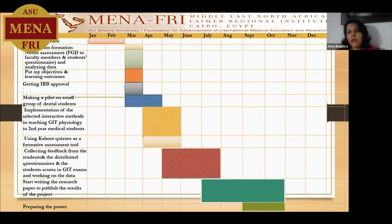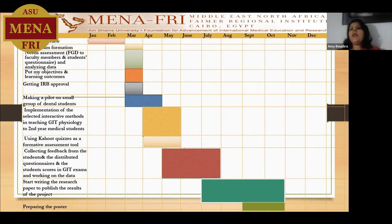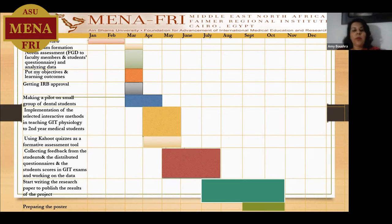In May, June, and July, I collected feedback from the students and the distributed questionnaires. Now we are analyzing the data and also the GIT exam scores of second- and third-year medical students, because third-year medical students studied GIT physiology in the first term by the traditional method. So I'm trying to compare the scores of the two cohorts to see the impact of the interactive learning method.